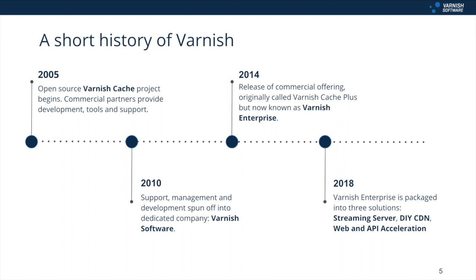Those use cases — like streaming video live and on demand, and constructing custom CDNs — have only grown in popularity. Varnish Enterprise was also later packaged into three full solutions, each optimized for a specific content delivery domain: Streaming Server for delivering live, OTT, VOD and HD video; Dai CDN for building customized CDNs using pre-built, pre-optimized components; and Web and API Acceleration for delivering dynamic, static and personalized web content.